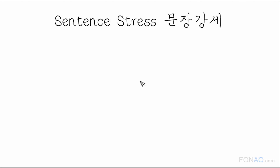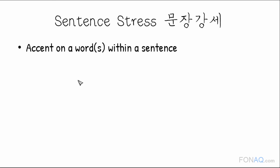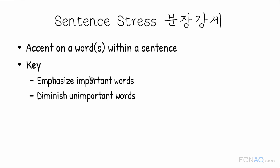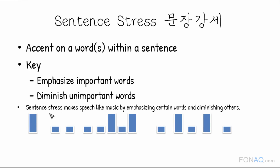Sentence stress, or 문장강세, refers to accent placed on a word or words within a sentence to emphasize certain pieces of information. Two simple points are key to producing good sentence stress. First, emphasize important words. Second, do the opposite with unimportant words by diminishing them. That's it. Sentence stress makes speech like music by emphasizing certain words and diminishing others.